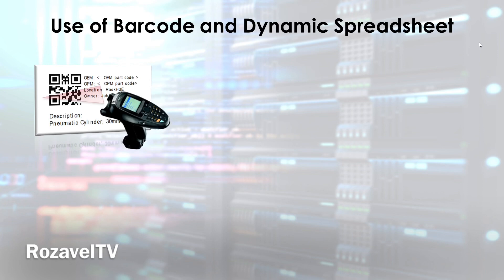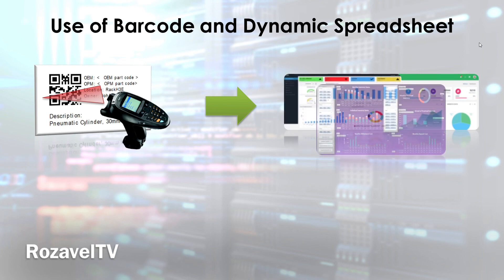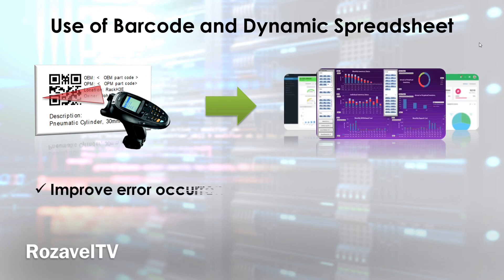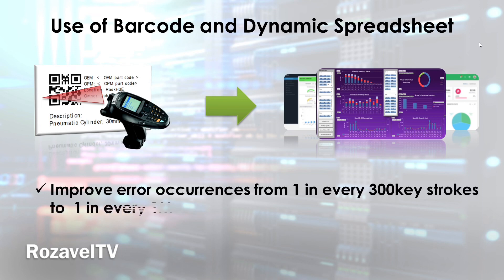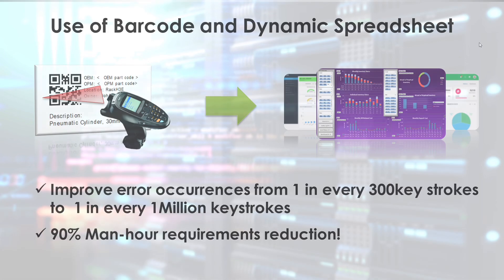But with the use of a barcode combined with dynamic spreadsheets on our inventory system, we can improve error occurrences from 1 in every 300 keystrokes to 1 in every 1 million keystrokes. We can also improve manpower requirements by up to 90%.